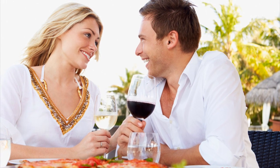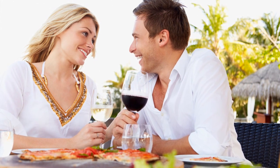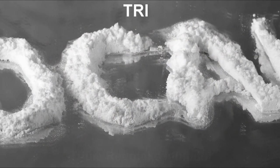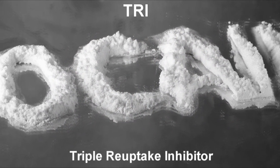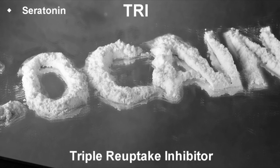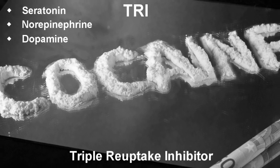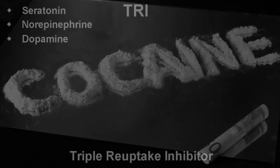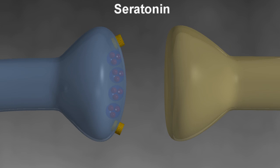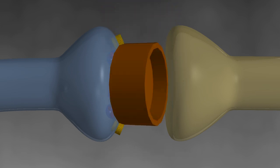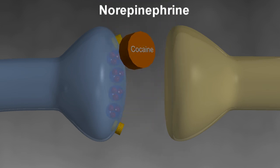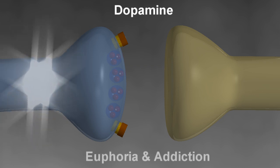Cocaine is a chemical known as a TRI or triple reuptake inhibitor that blocks the presynaptic reuptake of serotonin, norepinephrine and dopamine. Increased levels of serotonin in the synapse improve the user's mood. Increased levels of norepinephrine in the synapse produces the characteristic agitation and hyperactivity while the increased dopamine levels are responsible for the intense and addictive rush or euphoria associated with cocaine use.